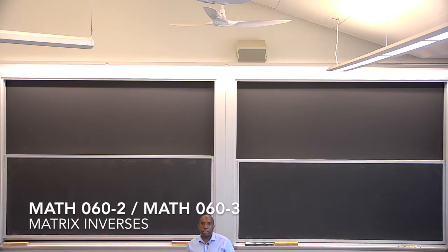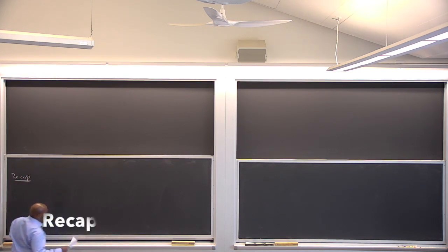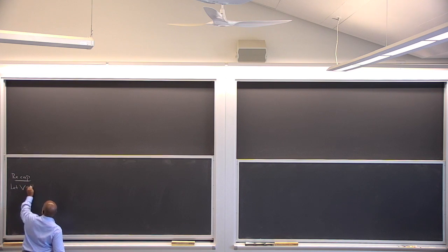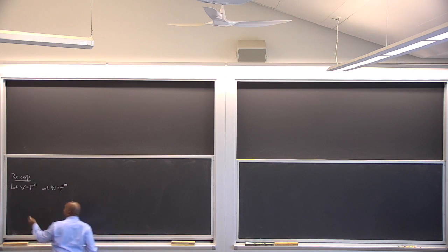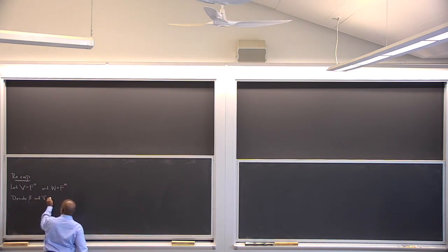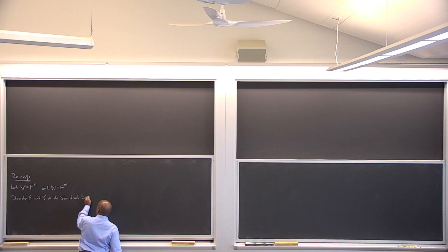Good morning. Today we're going to discuss lesson 16. Let me begin with a quick recap from last time. Last time we were starting to focus on the idea of matrix inverses. Let V be the collection of n-tuples and W be the collection of n-tuples. We'll also denote beta and gamma as the standard bases of these vectors.